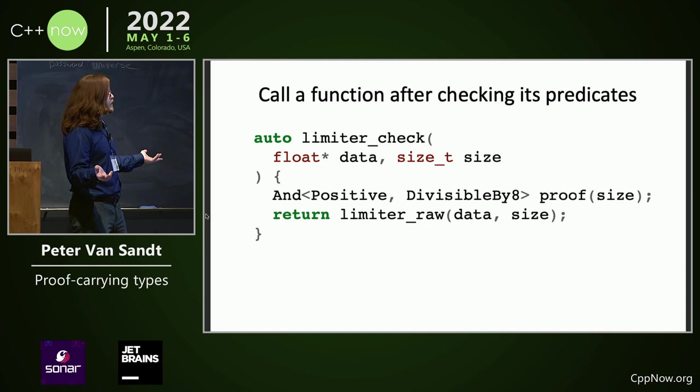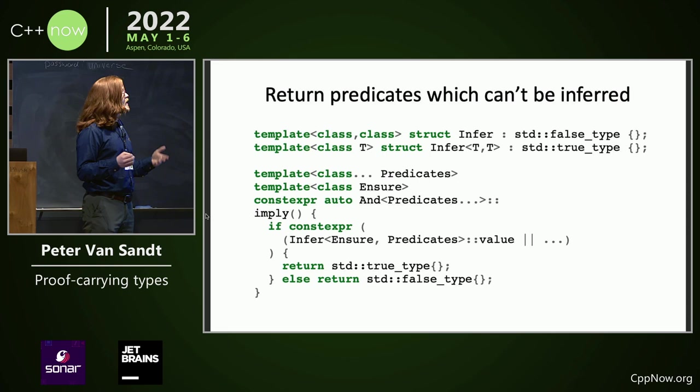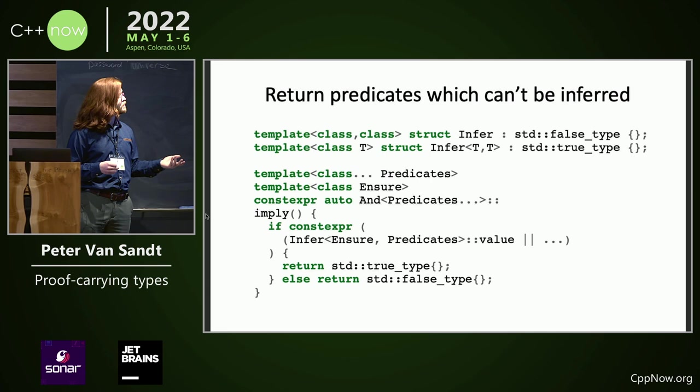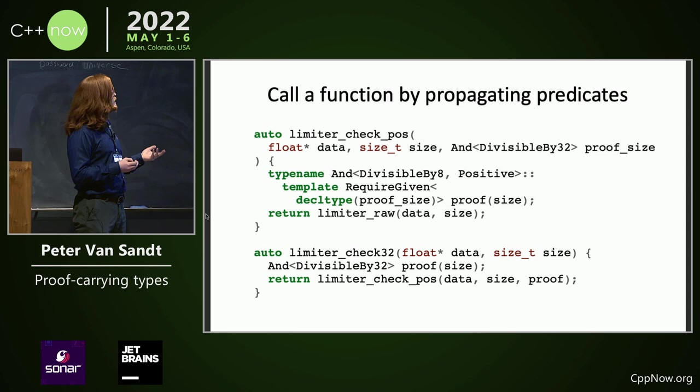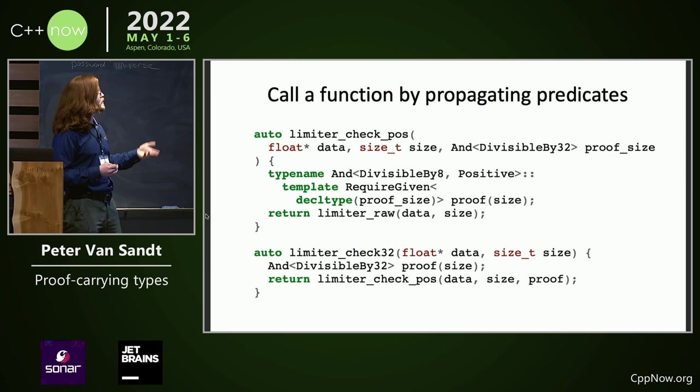Here we show infer. Infer is a type designed for specialization so that users can specify other kinds of inference. T obviously implies T. From imply we can return true_type or false_type based on whether or not we can infer the desired predicate given the input predicates. Here we demonstrate using inference to establish a proof of divisible by 8 given a proof of divisible by 32, and we demonstrate that it can propagate across two different functions by calling one from the other. Each predicate is checked exactly once.